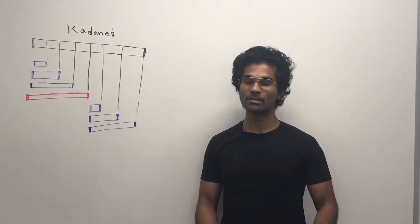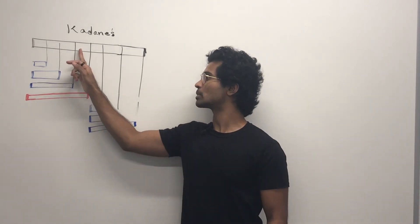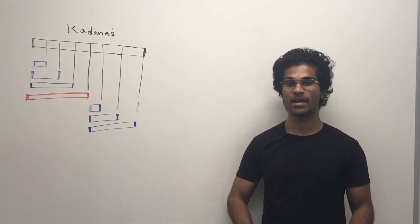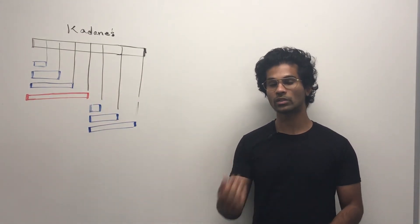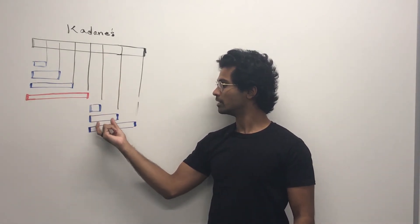Now, if at any point, our cumulative sum turns negative, like here, for example, if this was a very negative number, then the whole cumulative sum might become negative. In that case, we restart our cumulative sum from the next integer. So we start again here, here, and here.